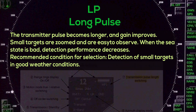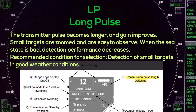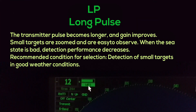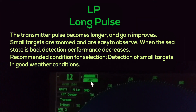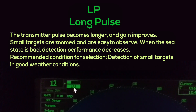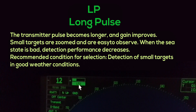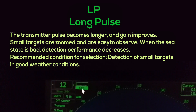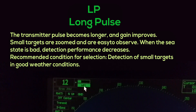LP — Long Pulse: the transmitter pulse becomes longer and gain improves. Small targets are zoomed and are easy to observe. When the sea state is bad, detection performance decreases. Recommended condition for selection: detection of small targets in good weather conditions.